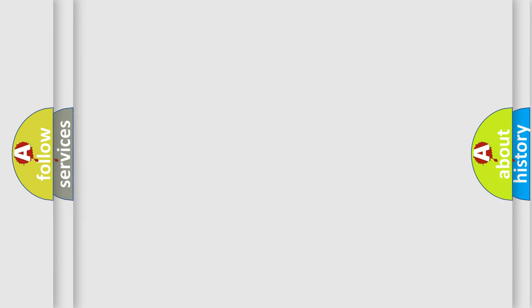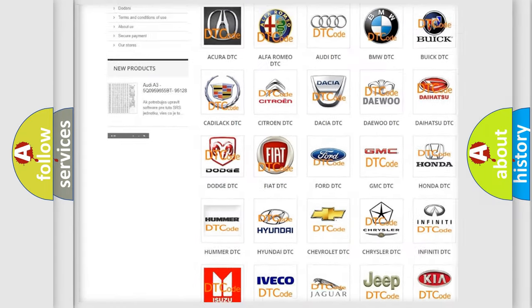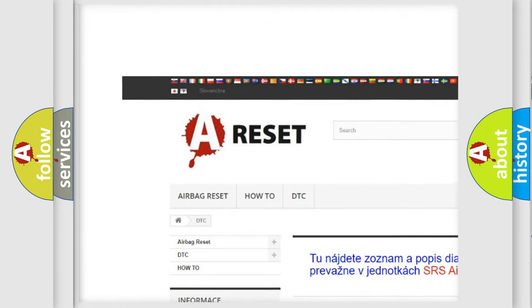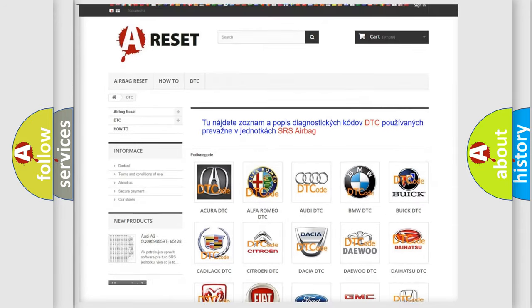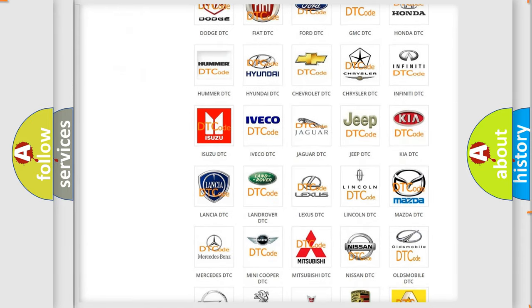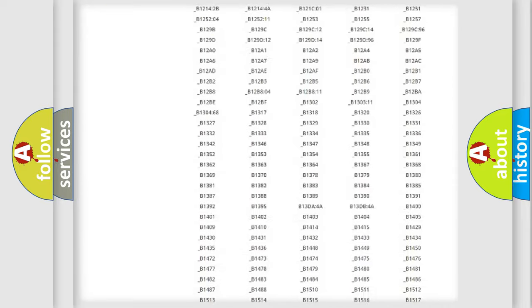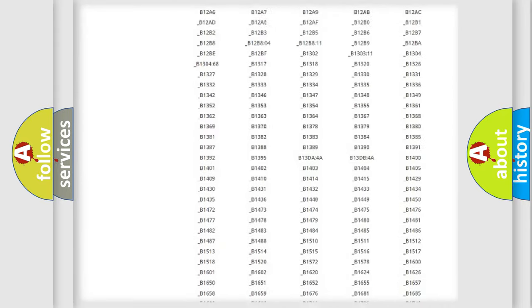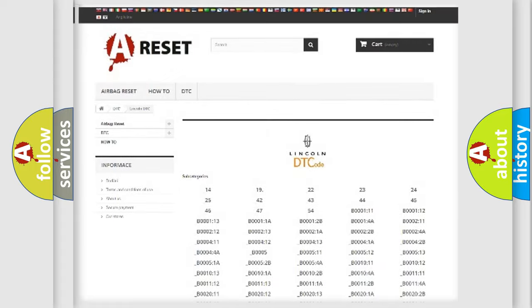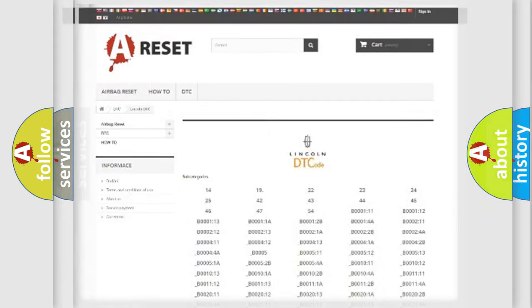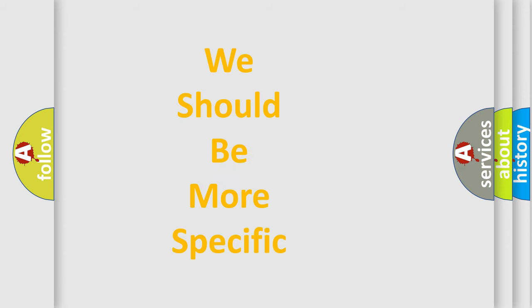Our website airbagreset.sk produces useful videos for you. You do not have to go through the OBD2 protocol anymore to know how to troubleshoot any car breakdown. You will find all the diagnostic codes that can be diagnosed in Lincoln vehicles, and many other useful things. The following demonstration will help you look into the world of software for car control units.